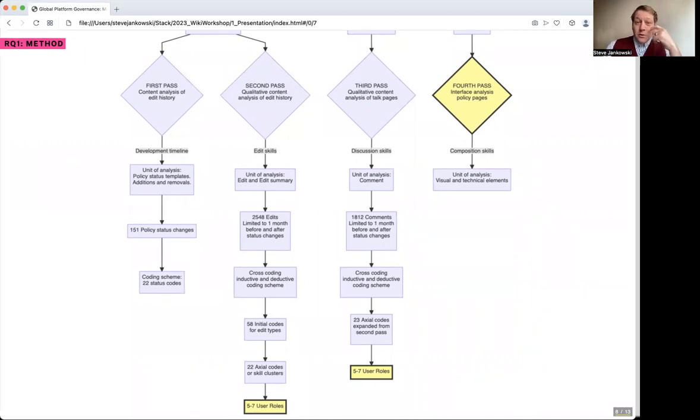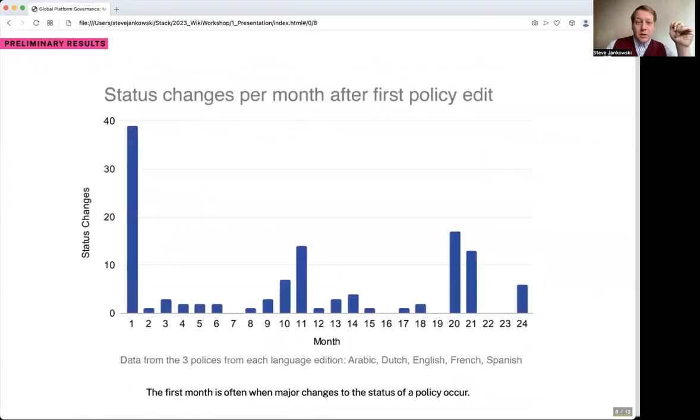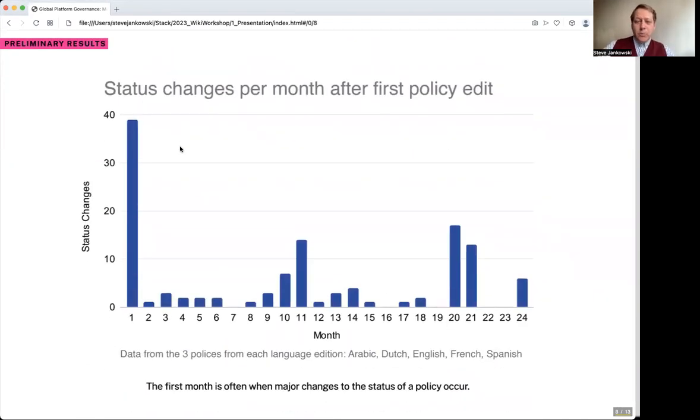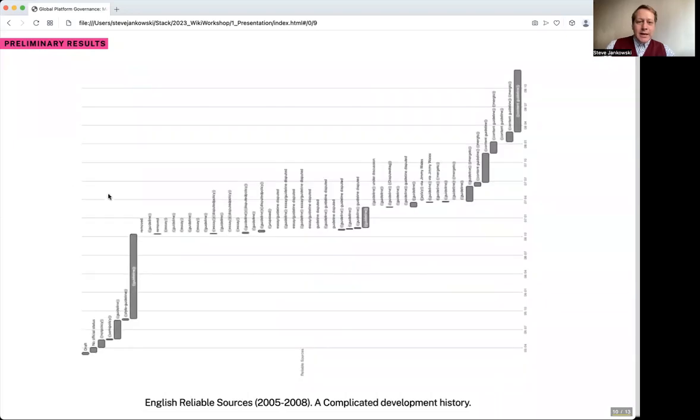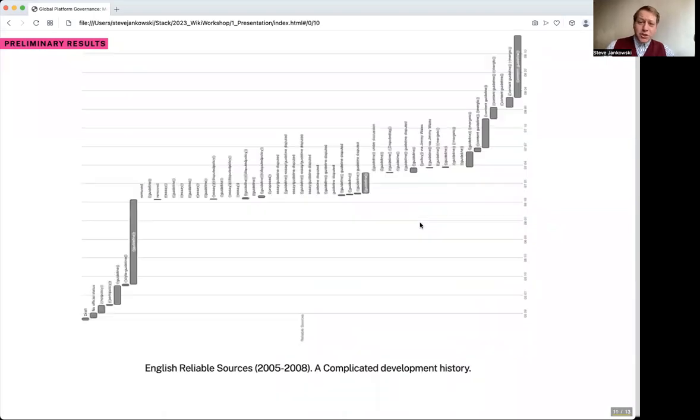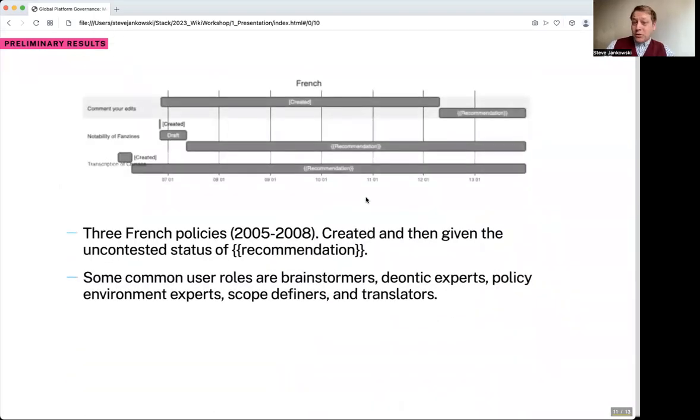The yellow there is where we're currently working. So some preliminary results: We noticed that most of the status changes happen in the first month of policies, that some policies have complicated development histories, like reliable sources has about 50 moments of change, which compares to something like the French edition which has very few changes in terms of status.